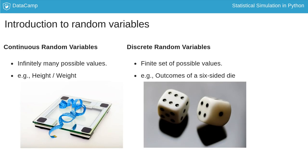Similarly, if the variable can only take a finite set of values, it is called a discrete random variable. The roll of a six-sided die can have only one of six possible outcomes and is thus considered a discrete random variable.